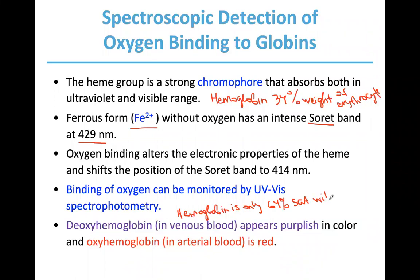That means 36% of hemoglobin has no oxygen, and so this blood appears purplish in color. Oxyhemoglobin in arterial blood — the blood that comes out of the lungs with lots of oxygen — is 96% saturated.